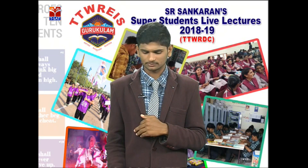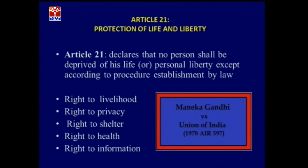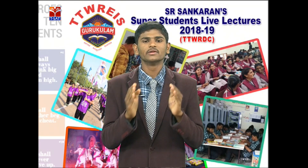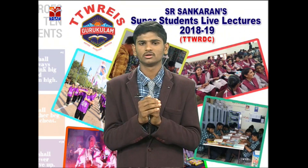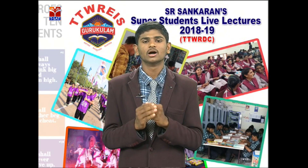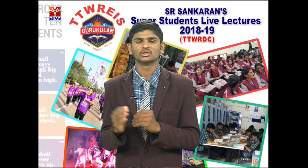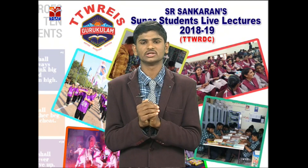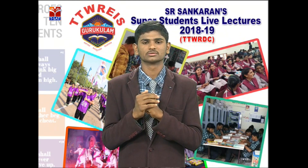Article 21 protects every citizen's life and liberty — no citizen shall be deprived of life and personal liberty except according to procedure established by law. In the Menaka Gandhi versus Union of India case, the Supreme Court declared additional rights under Article 21: right to livelihood, right to privacy, right to shelter, right to health, and right to information. These rights protect citizens from the state's absolute power.